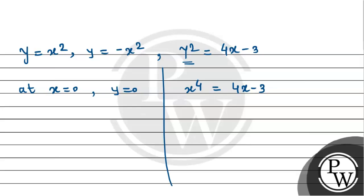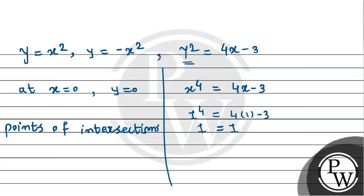Substituting x = 1: the power gives 4×1 - 3 = 1, so 1 = 1. Therefore, the points of intersection are (0, 0) and (1, 1), because y² = 4x - 3 is satisfied at (1, 1).